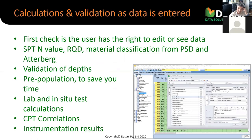Once you've chosen your database and entered your data, the data can be validated and calculated so that actual results — whether N values, RQDs, lab tests, DCP correlations, CPT correlations, or instrumentation results — are stored in your database for future use. As you type and click save, it calculates that automatically.